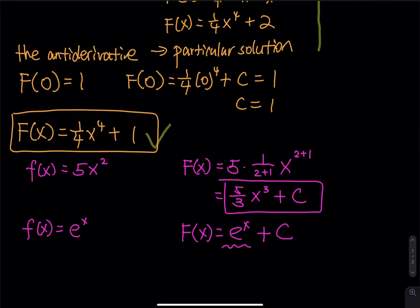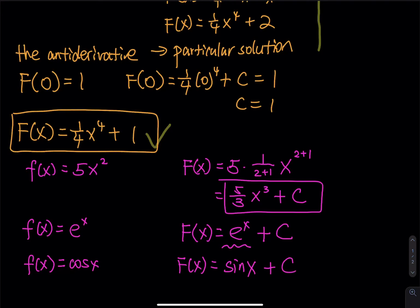What about f(x) = cos(x)? The antiderivative means: the derivative of what equals cosine? The answer is the derivative of sine equals cosine. The general solution is sine(x) plus C. If you replace C with 10 — sine(x) plus 10 — and take the derivative, the derivative of 10 is 0, so you only have cosine in the derivative.